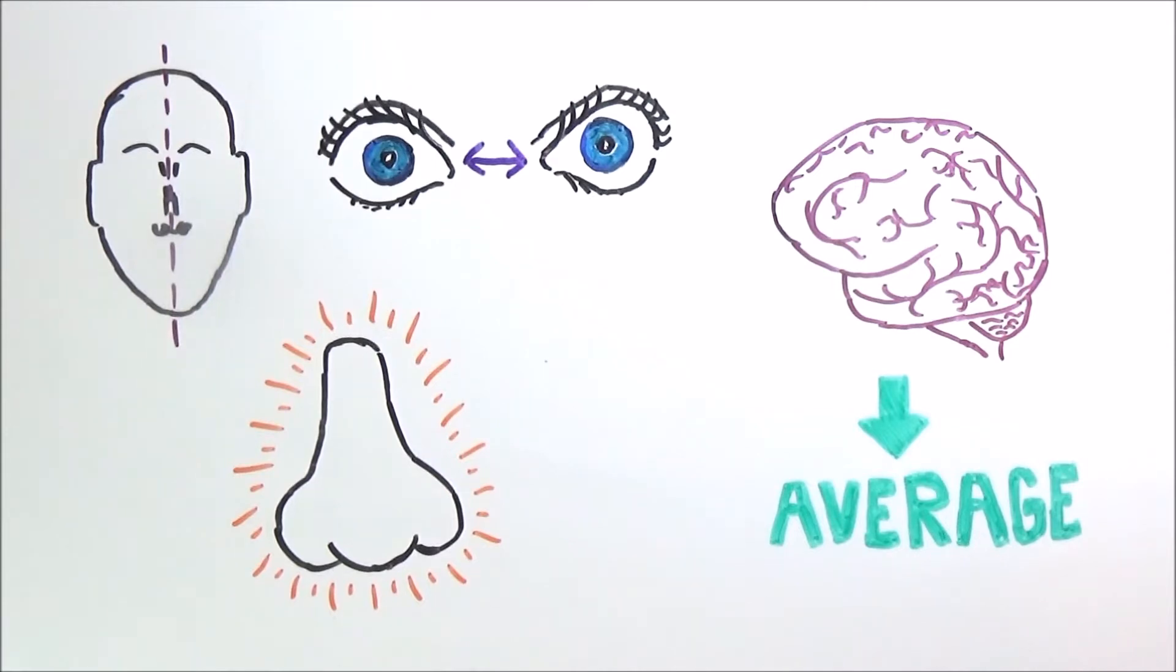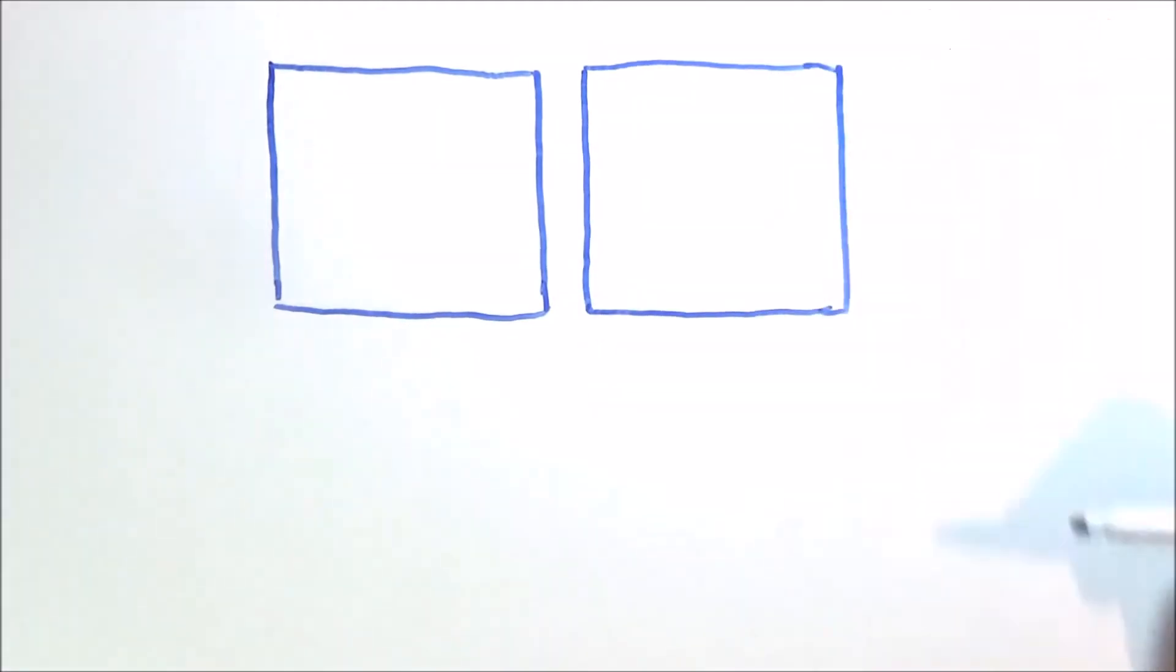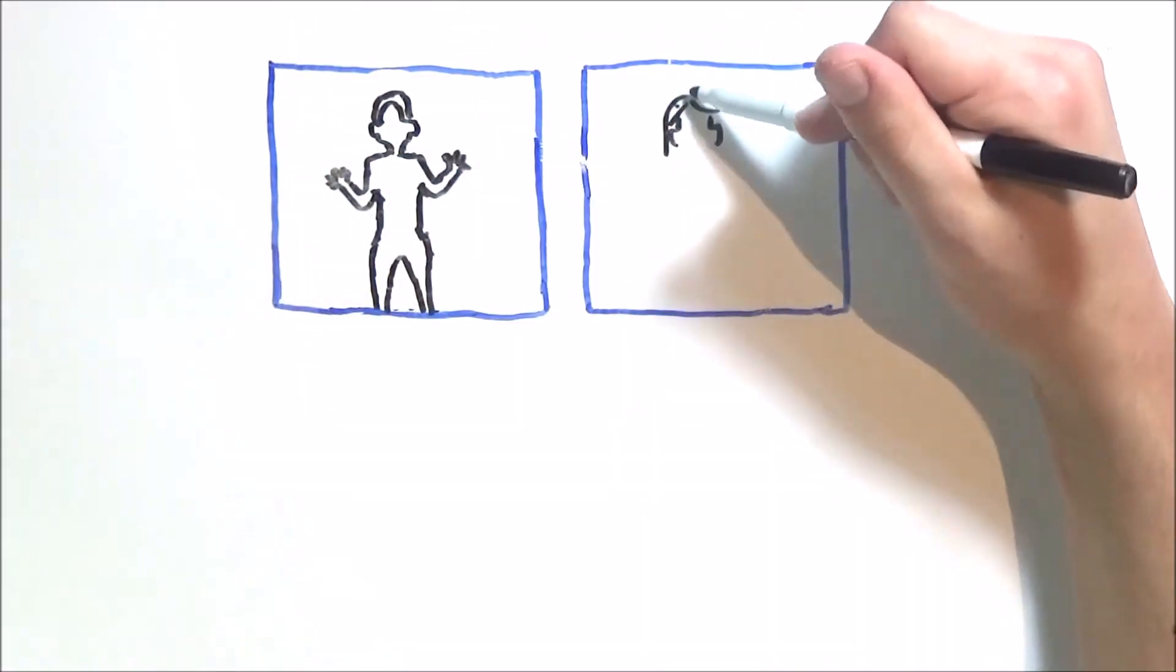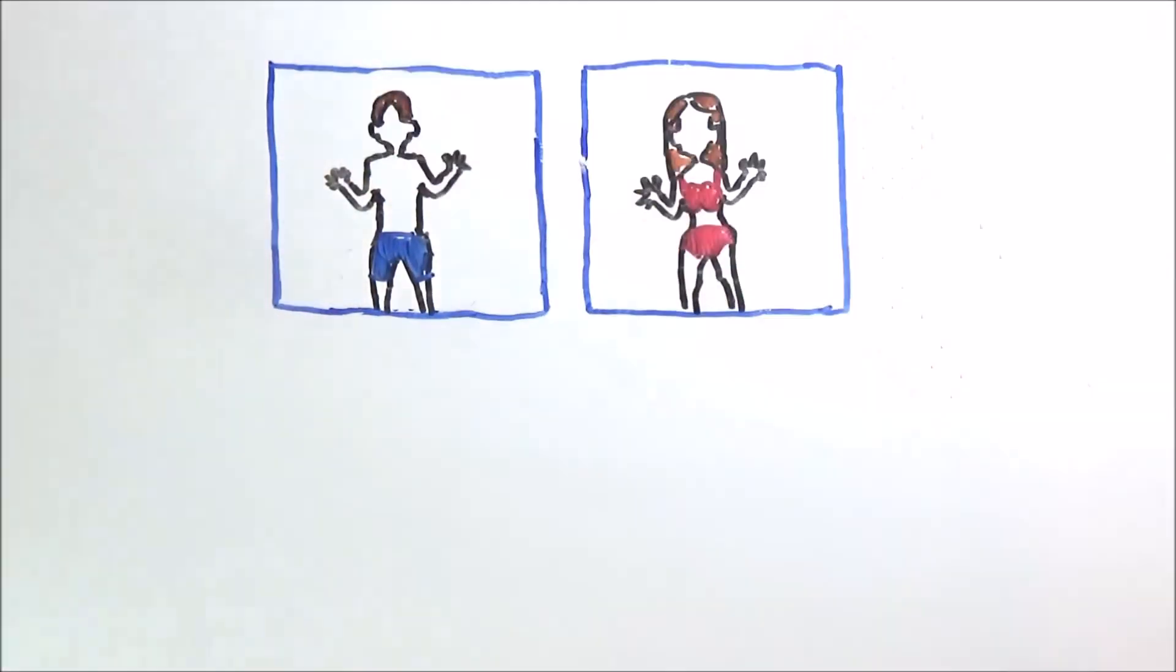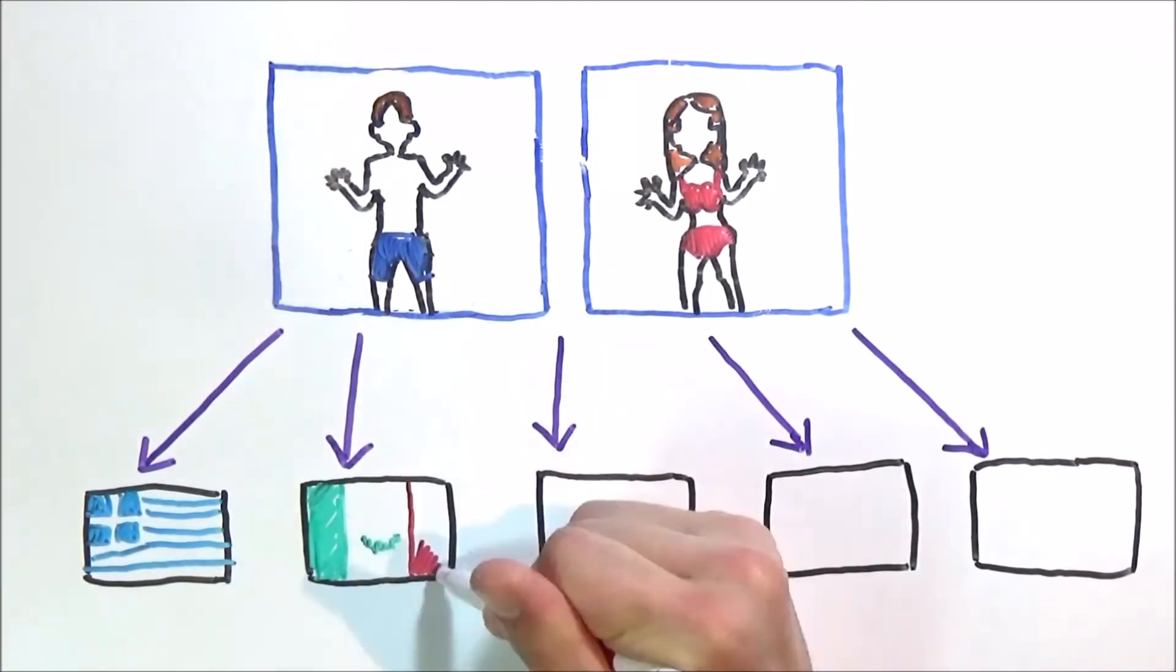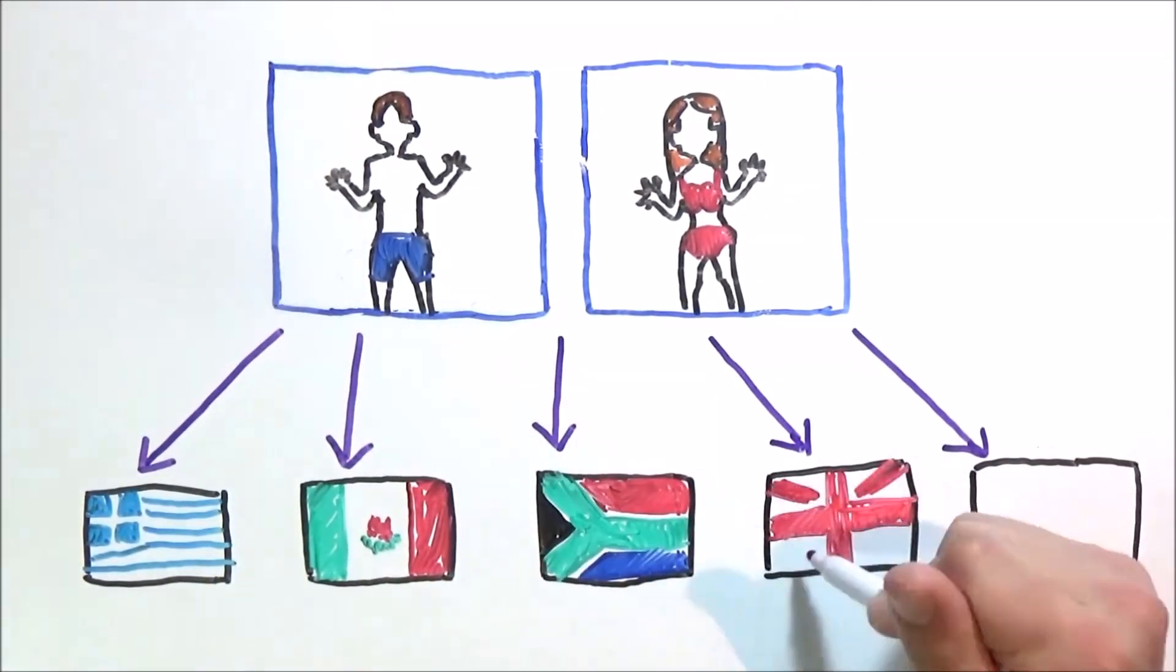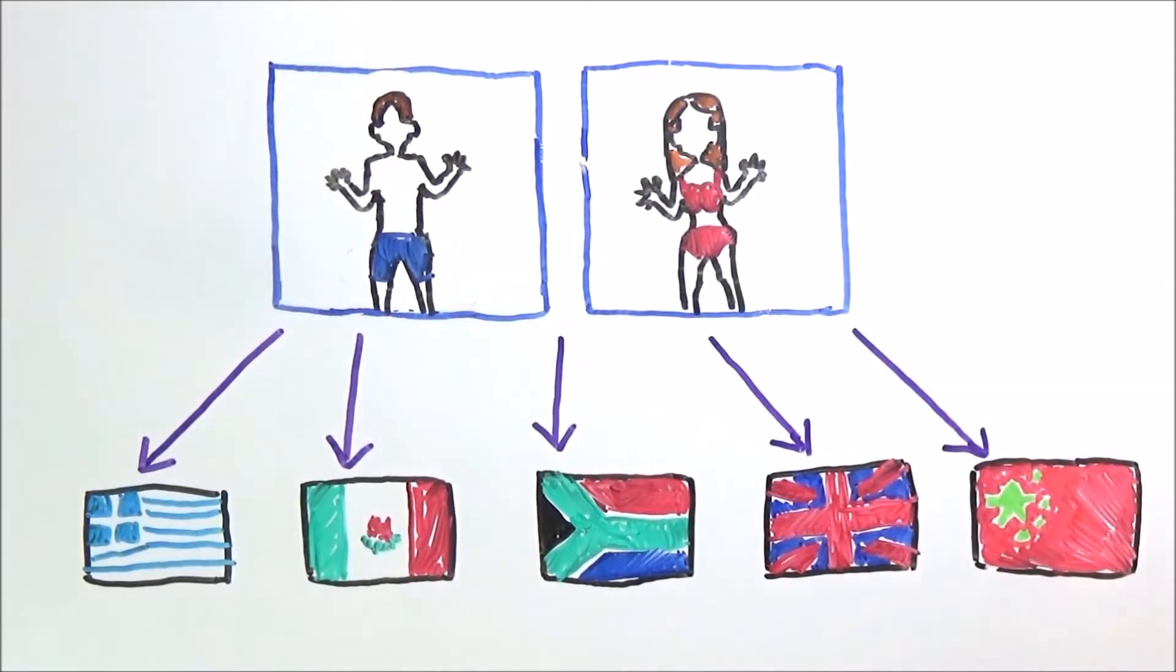Interestingly, it turns out that culture plays a big part in an individual's definition of attraction as well. An online United Kingdom pharmacy conducted an experiment where a picture of a male and a picture of a female were sent out to various countries. They instructed the recipients of the pictures to photoshop the pictures towards the ideal body, face, skin color, etc. for each gender.